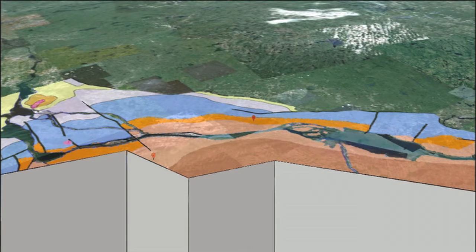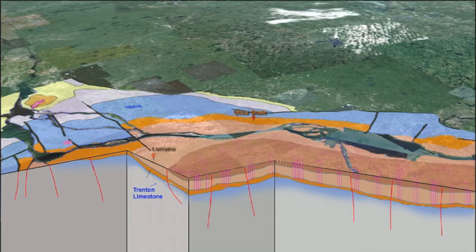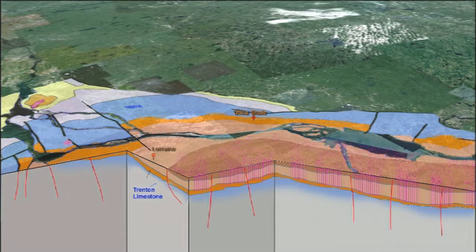A longitudinal cut of the plain shows us this stratification. The extraction of the gas in the Utica shale cannot be done except by crisscrossing the whole plain with about 20,000 wells. In fracturing that amount of rock, one may expect to recover about 20% of the methane contained in the gas deposit.